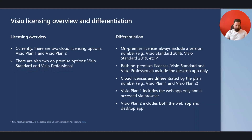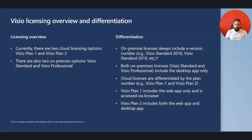What's important to understand is that we have two different licensing options. One is the old on-premise licensing and the other one is the new cloud-based licensing. In the cloud we have in general two licenses you can purchase, and these are called Visio Plan 1 and Visio Plan 2. Please note there is no version number assigned with them — they always come with just a plan number.